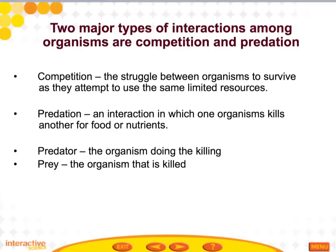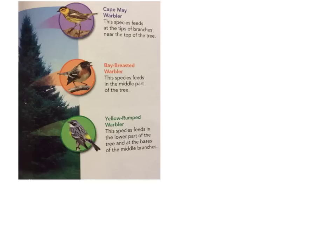Organisms within different environments interact with each other in two major ways: competition and predation. Competition is the struggle between organisms to survive as they attempt to use the same limited resources. Predation is an interaction in which one organism kills another for food. In predation there is a predator — the organism doing the killing — and prey — the organism that is killed. For example, the Cape May warbler, bay-breasted warbler, and yellow-rumped warbler share the same habitat but avoid competition because each feeds at a different level of the tree.